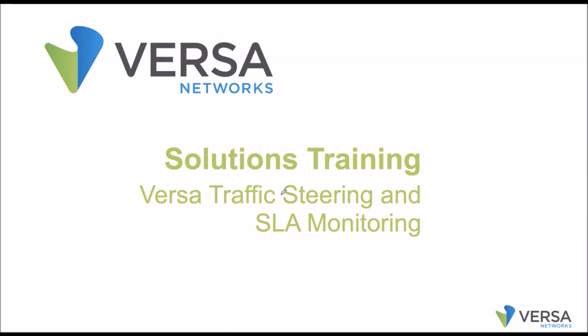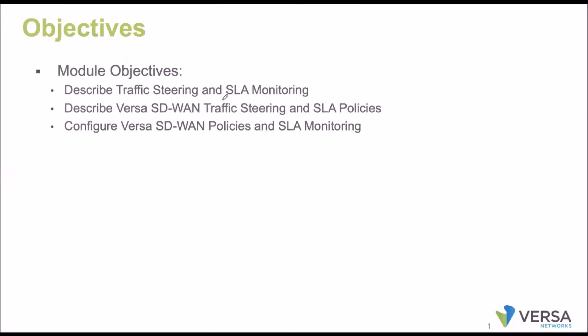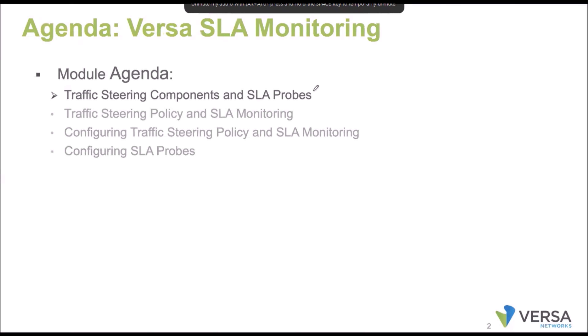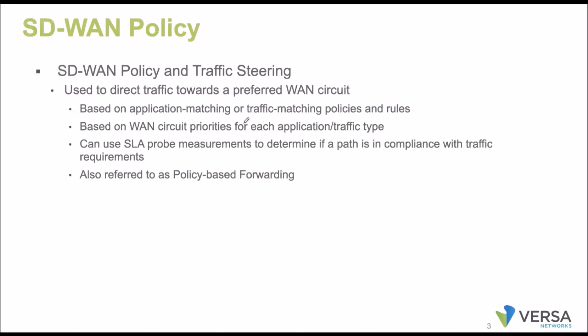We'll be seeing more about underlay connectivity - how the underlay connectivity is going to be selected and what parameters it will use. In this chapter we'll be talking about traffic steering, how we configure it, case studies for SD-WAN policies, SLA monitoring, SLA probing, and how to configure the SLA probes.